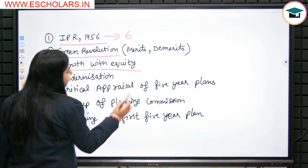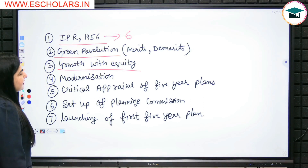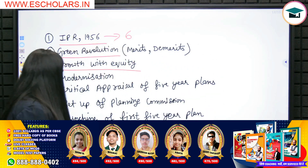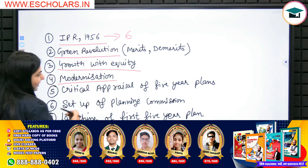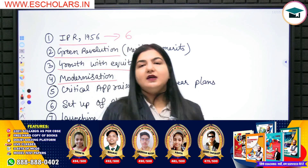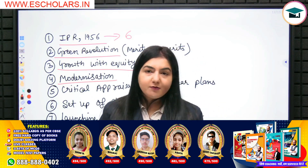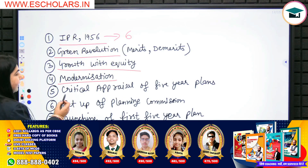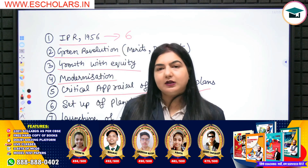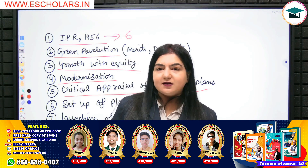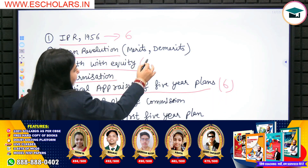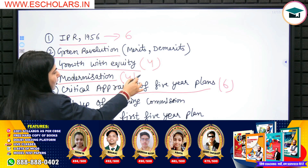Next, Growth with Equity as a Planning Objective — it is very important and is a short note. Next, Critical Appraisal of 5-Year Plans: जो 5-Year Plans launch हुए थे India में, उनका critical appraisal — मतलब क्या advantages रहीं और क्या failures रहे उन plans के — ये बहुत अच्छे से करना है 6 marks के लिए। Growth with Equity is for 4 marks and Modernization for 3 or 4 marks.